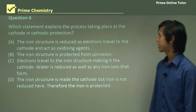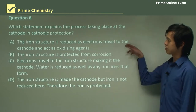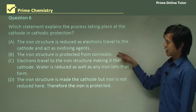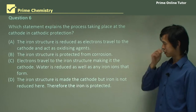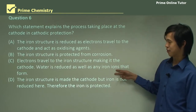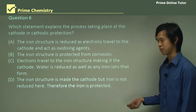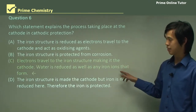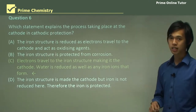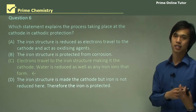Which statement explains the process taking place at the cathode in cathodic protection? The answer: Electrons travel to the iron structure, making it the cathode. Water is reduced, as well as any iron ions that have formed, which are reduced back into iron solid. The iron is protected.